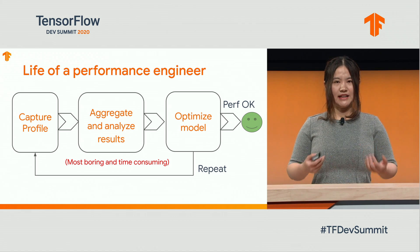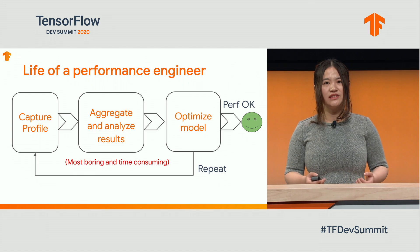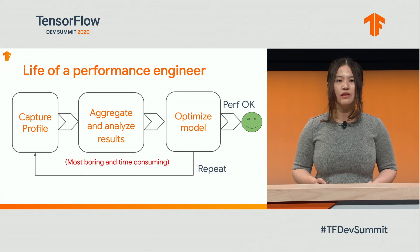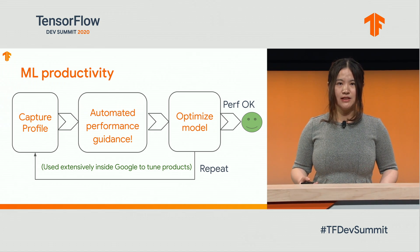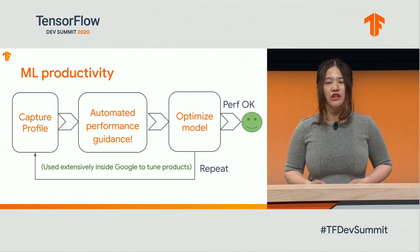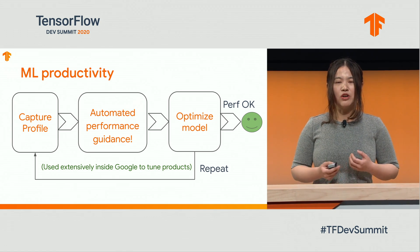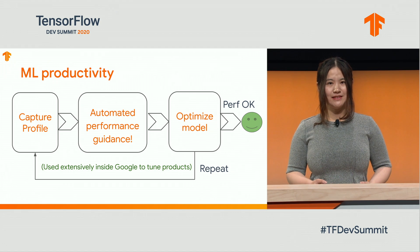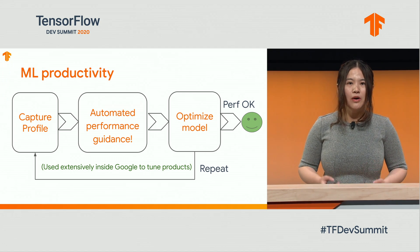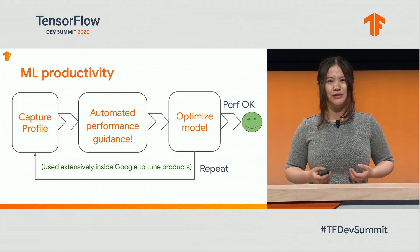Can we make it more productive? The most repetitive work here is to gather the trace information and analyze the result. We always want to work smarter. At Google, we found a way to build tools to automatically process traces, analyze them, and provide automated performance guidance. It does intensive trace analysis and learns from how Google internal experts tune performance, automating it for non-expert users.